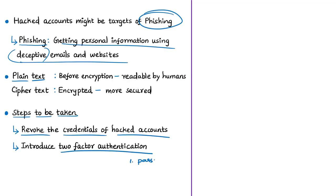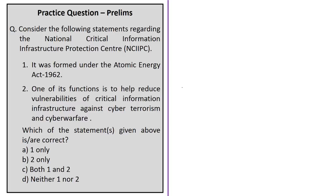Further technical steps must be introduced and critical information infrastructure must be developed with information security in mind. In recent days we have also seen Pegasus attacks and StrandHogg vulnerability. Even government employee accounts in sensitive organizations are being hacked. While promoting Digital India and e-governance, sufficient focus should be given to cyber security infrastructure and information security — otherwise, digital India without ensuring security could be a digital disaster.